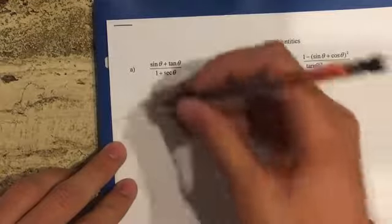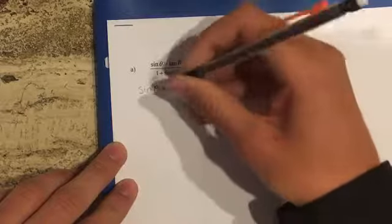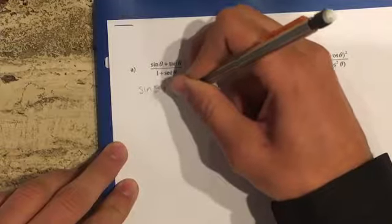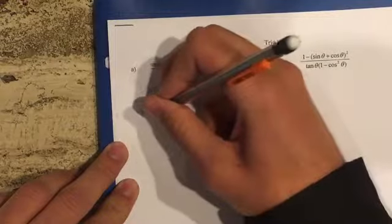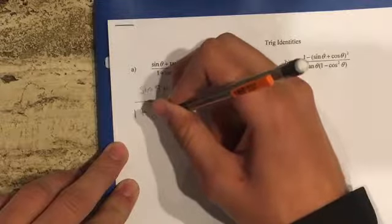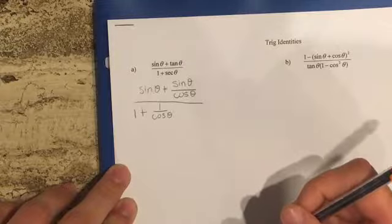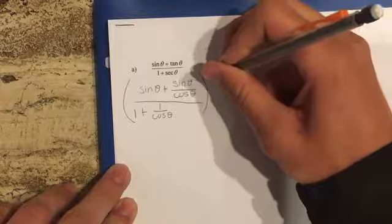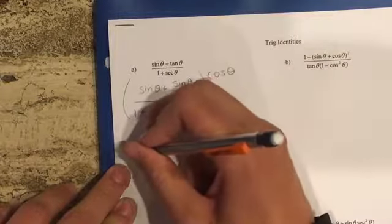So first, we have sine of theta plus tangent of theta, which turns into sine of theta over cosine of theta, all over 1 plus secant, and secant turns into 1 over cosine. Then we want to fraction-bust this and multiply everything by cosine of theta, and you get sine of theta.